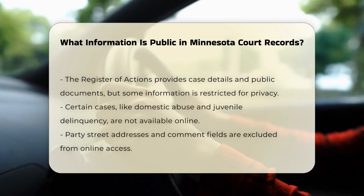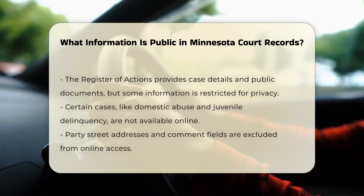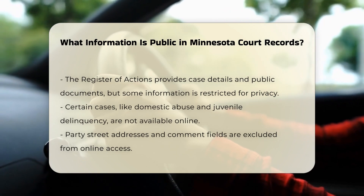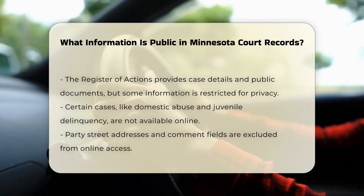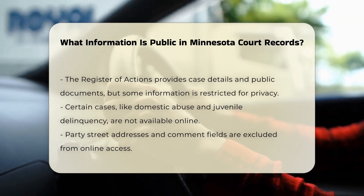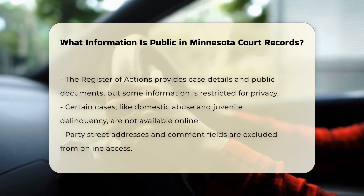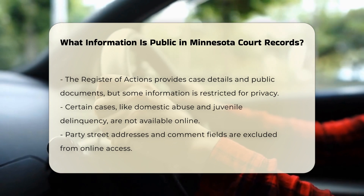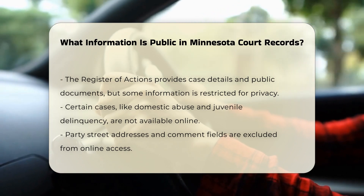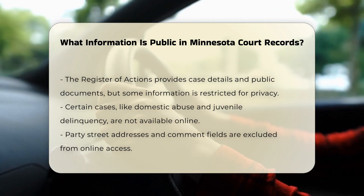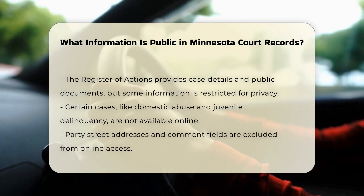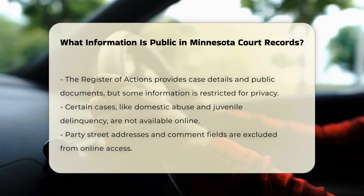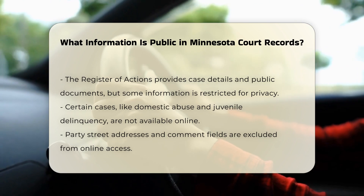Through EMCRO, you can view case details such as the Register of Actions, which includes case information and public documents. However, some information is limited for privacy reasons. For example, domestic abuse and harassment restraining order cases, child protection and juvenile delinquency cases, and certain civil commitment case documents are not available online. Party street addresses and comment fields in all case types are also not available online.